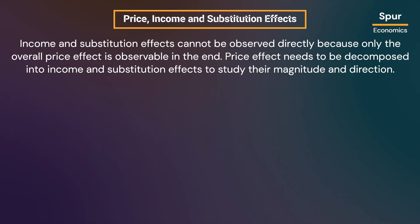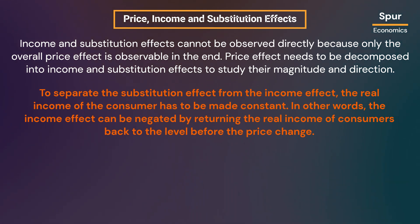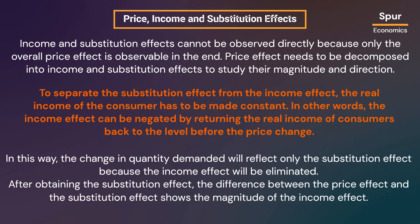Income and substitution effects cannot be observed directly because only the overall price effect is observable. Price effect needs to be decomposed into income and substitution effects to study their magnitude and direction. To separate the substitution effect from the income effect, the real income of the consumer has to be made constant. In other words, the income effect can be negated by returning the real income of consumers back to the level before the price change. In this way, the change in quantity demanded will reflect only the substitution effect. After obtaining the substitution effect, the difference between the price effect and the substitution effect shows the magnitude of the income effect.